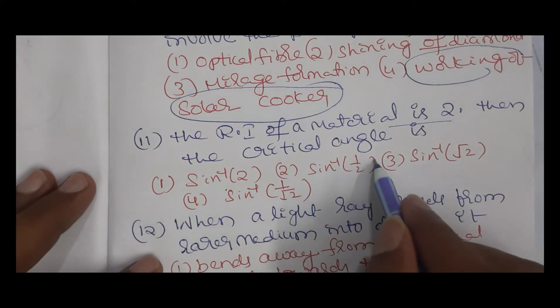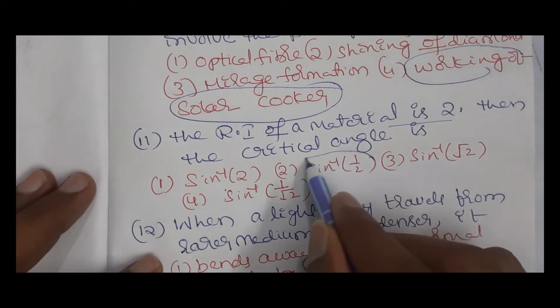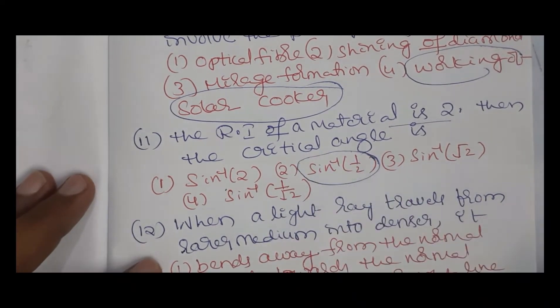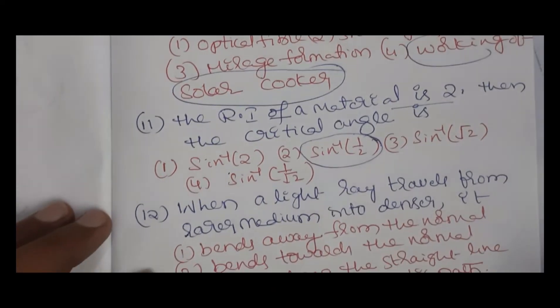Question 11: refractive index of material is 2. What is the critical angle? The option is sin⁻¹(1/2), which we already explained — sin C = 1/n = 1/2.